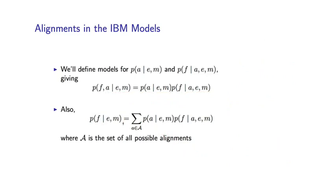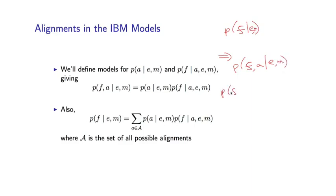The bottom line is that estimating P(F|E) directly is very difficult. So instead, we come up with a model of P(F,A|E,M), and then P(F|E,M) equals the sum over A of P(F,A|E,M), marginalizing out the alignment variable.